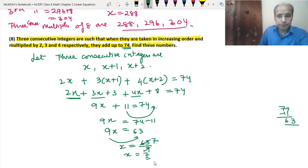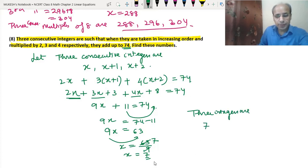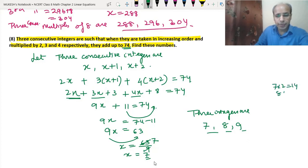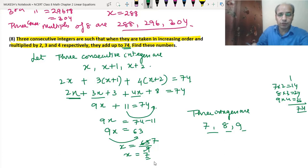So the three consecutive integers are 7, 8 and 9. Let's check: 7 × 2 = 14, 8 × 3 = 24, 9 × 4 = 36. Adding: 14 + 24 + 36 = 74. We got the correct answer of 74.